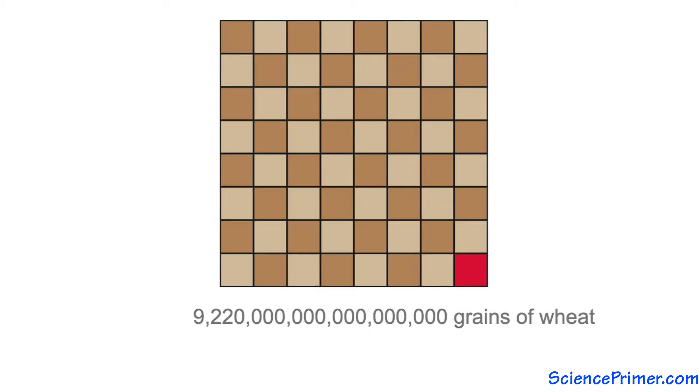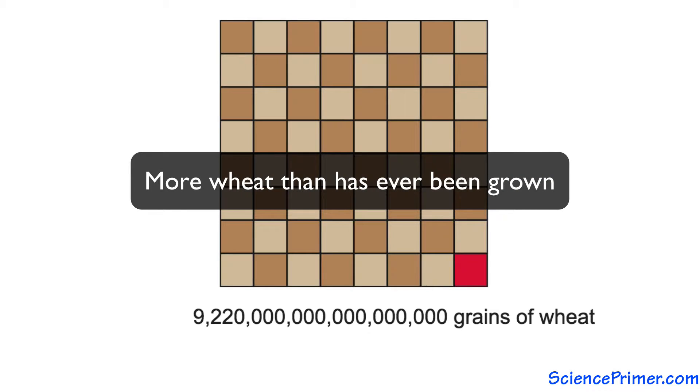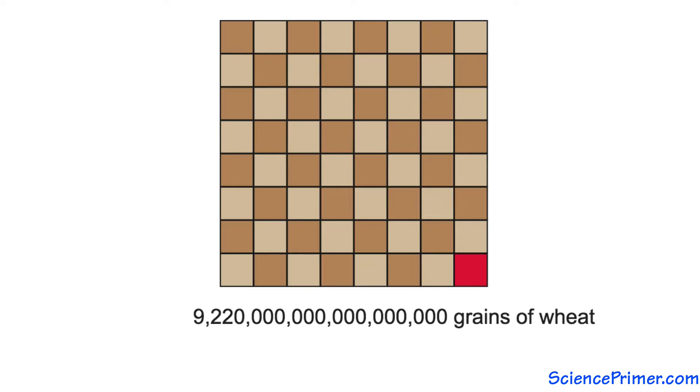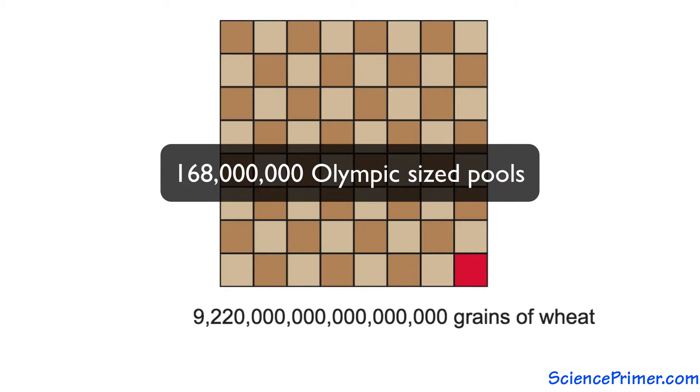922 followed by 16 zeros. For perspective, this is equal to roughly 5,000 years of US wheat production using modern technology. That's more wheat than has ever been grown. It's enough wheat to fill 168 million Olympic-sized swimming pools.